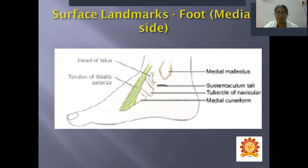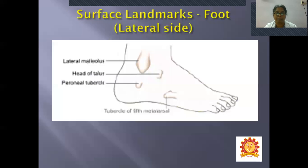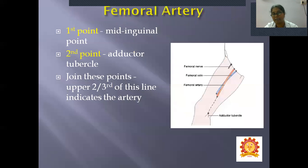Surface landmarks of the foot on the medial side: medial malleolus, head of the talus, tendon of tibialis anterior, and a shelf-like projection from the calcaneum called the sustentaculum tali. On the lateral side: lateral malleolus, head of the talus, peroneal tubercle, and the tubercle of the fifth metatarsal.